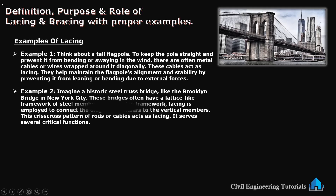The second example: imagine a historic steel truss bridge like the Brooklyn Bridge in New York City. These bridges often have a lattice-like framework of steel members. Within this framework, lacing is employed to connect the diagonal members to the vertical members. This criss-cross pattern of rods or cables acts as lacing. You can see this criss-cross type framework — these are the steel members, and these diagonal criss-cross elements are the lacing.